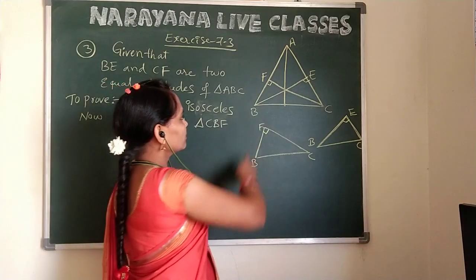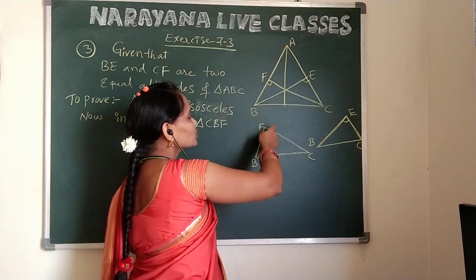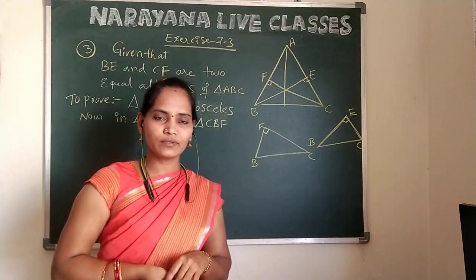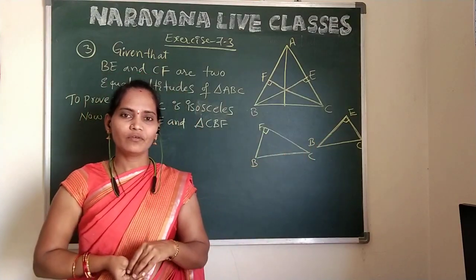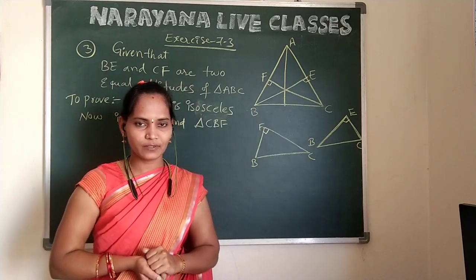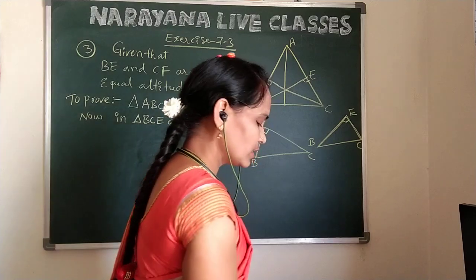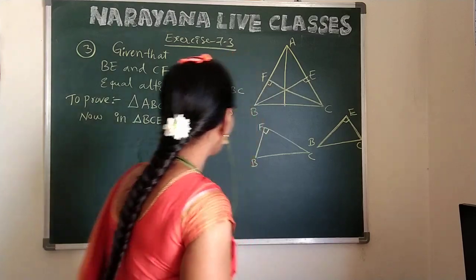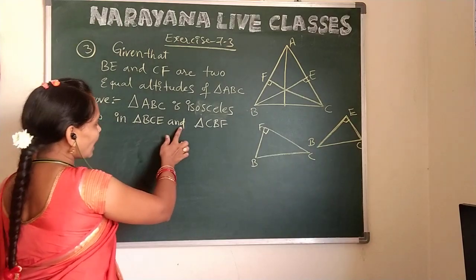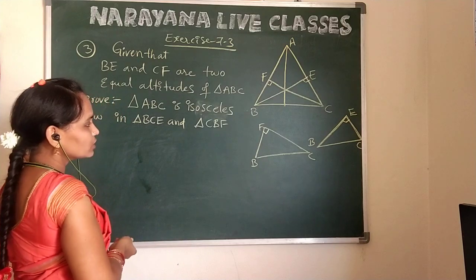By RHS congruency, we need to prove that these two triangles — triangle BEC and triangle CFB — are congruent. After showing that, by the CPCT rule we can prove that triangle ABC is an isosceles triangle. So first we take these two triangles: BEC and BFC.